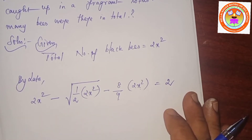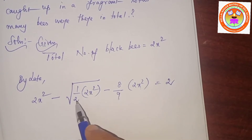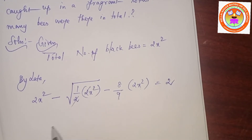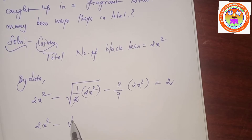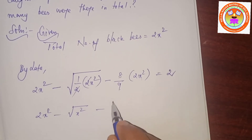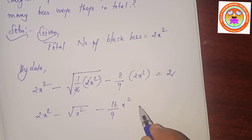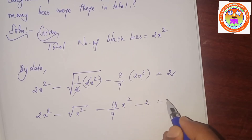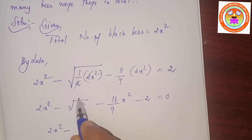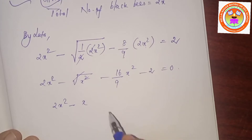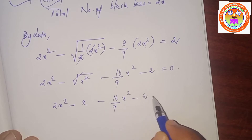Simplifying: 2x squared minus x minus 16x squared/9 equals 2. Bringing 2 to the left: 2x squared minus x minus 16x squared/9 minus 2 equals 0. To eliminate the fraction, multiply every term by 9: 18x squared minus 9x minus 16x squared minus 18 equals 0.